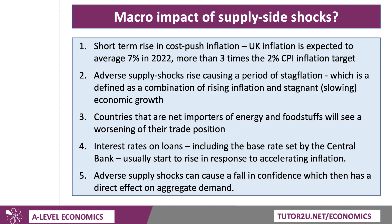At a macro level, these supply-side shocks are really quite important. The most obvious effect is inflation — you're going to get a rise in cost-push inflation. For example, in the UK, inflation is forecast to average 7% in 2022; it could, at some point during the year, reach more than 10%. That is three and a half times the 2% CPI inflation target. One of the risks of a supply shock is that, although it could be temporary, it might cause a longer period of stagflation — this combination of rising inflation and slowing economic growth. Not a good place to be.